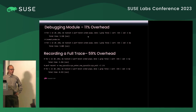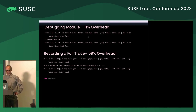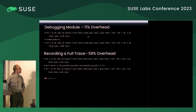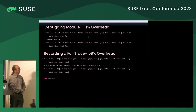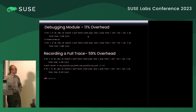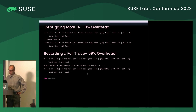If you thought you'd just record a full trace and be done with it, well you could, but you'd actually be paying 59 percent in overhead — your workload will be much slower. And if you record a trace like this using the raw syscalls trace point sysenter and sys_exit, you'd actually find out...